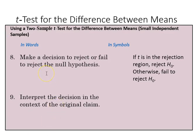Next, we make our decision to either reject or fail to reject the null, and then interpret that decision in the context of the original claim.